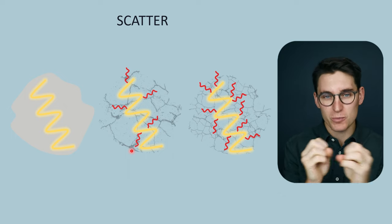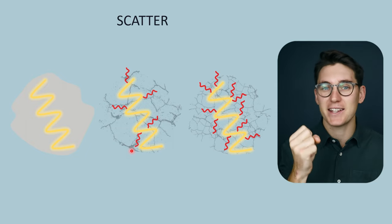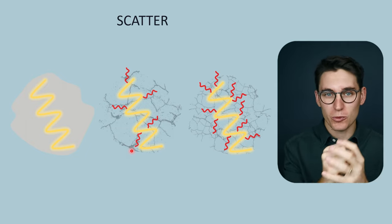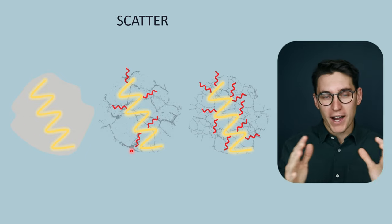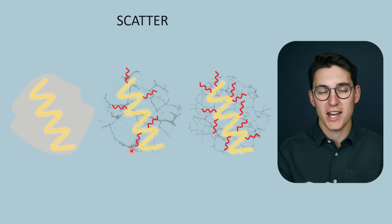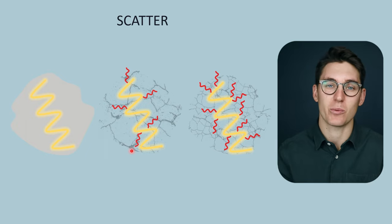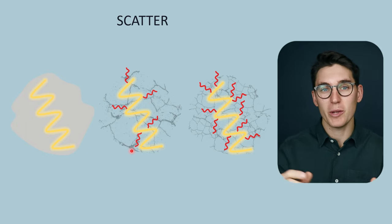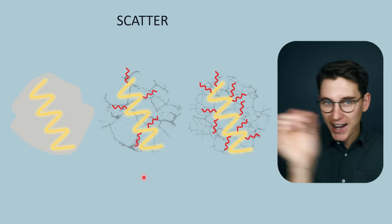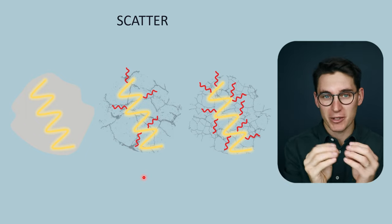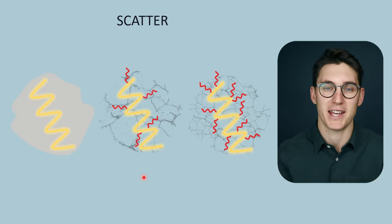The more densely those small units are packed within that tissue, the more scatter we will get. The higher the acoustic impedance of those small units, the more scatter we will get. And the wider the radius of those units, the more scatter we will get, as long as those units remain shorter than a wavelength within the incident ultrasound beam. If we increase the frequency of our incident beam, the higher the frequency, the more chance of contact with small units, and the more scatter we will get.